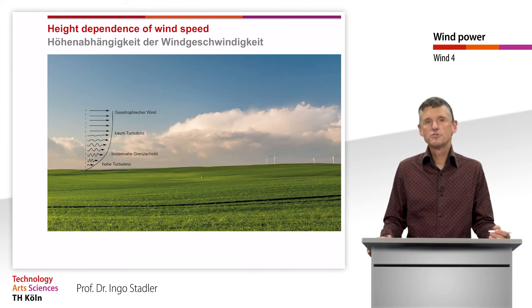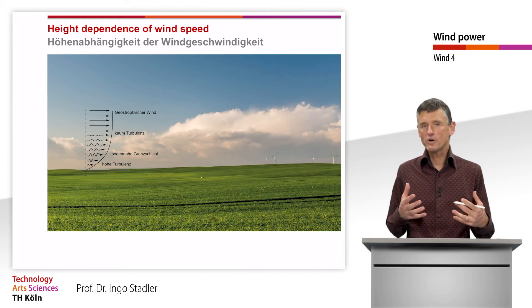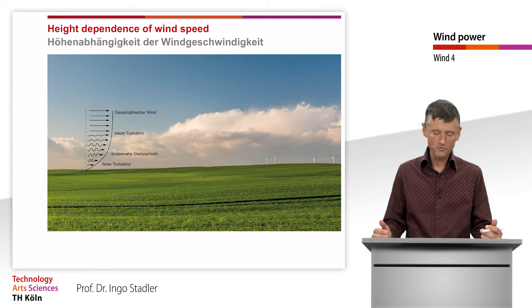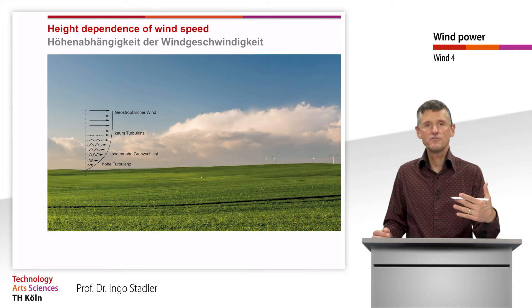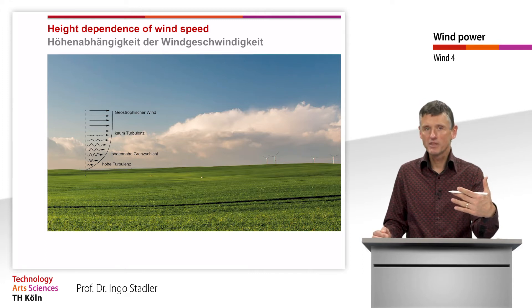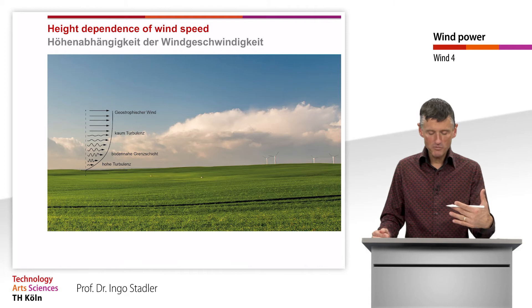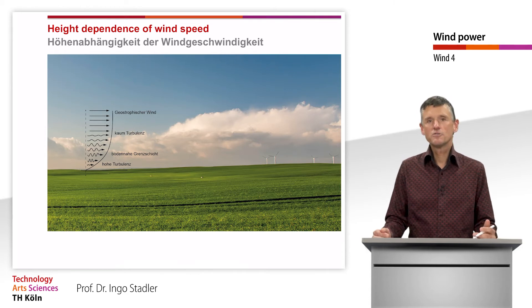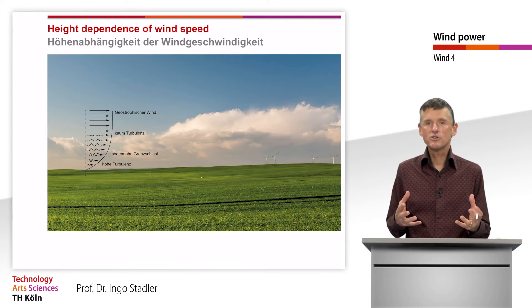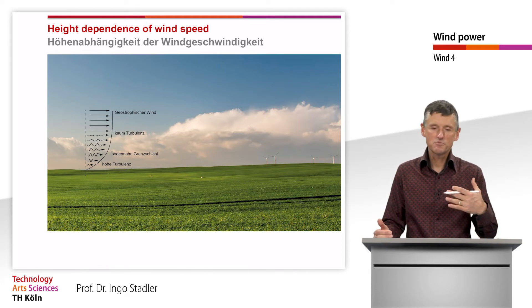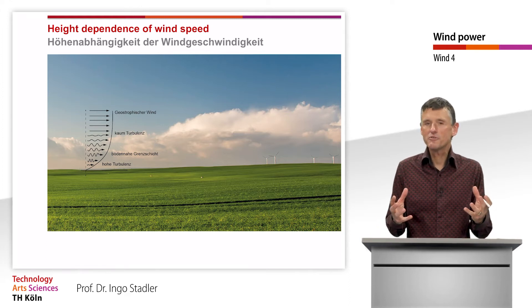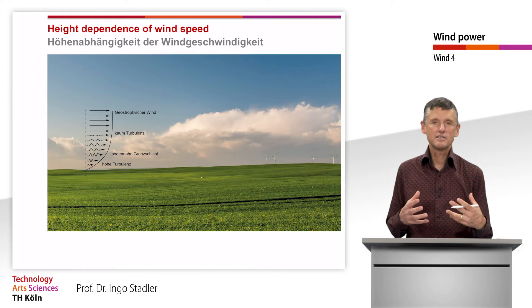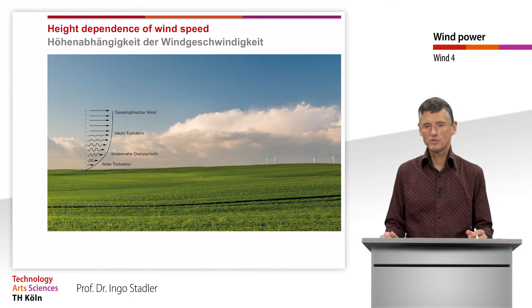Above the surface we have quite turbulent behavior of the wind, and that turbulence decreases the higher we get. At a certain minimum height the wind speeds become more or less stable — the speed does not increase much more with greater heights — and that is typically the area where we try to place the rotors of our wind turbines.